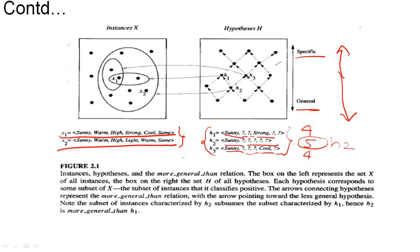In the hypothesis space visualization, H2 is placed toward the bottom, which indicates general, while H1 and H3 are more specific than H2 and are placed above H2. Above is specific, below is general. This is the representation of the hypothesis space, and we are mapping these hypotheses to our instances.